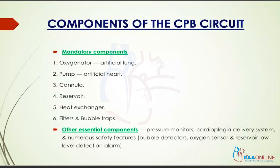The components of the cardiopulmonary bypass circuit include the mandatory components: the oxygenator, which functions as the artificial lung; the pump, which functions as the artificial heart; the cannulae; the reservoir or venous reservoir; the heat exchanger, which helps to maintain temperature; and filters accompanied with bubble traps, which prevent systemic embolization of any air that has entered the circuit. Other essential components include pressure monitors, the cardioplegia delivery system, and numerous safety features like bubble detectors, the oxygen sensor, and the reservoir low-level detection alarm.